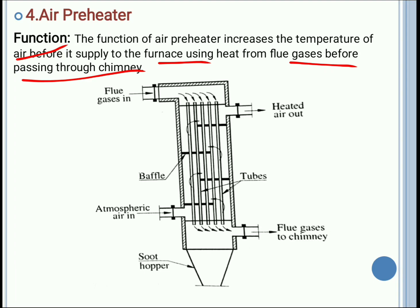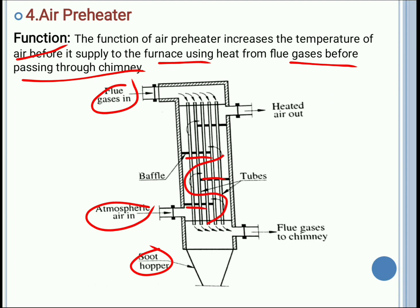This is the construction of air preheater. It consists of a soot hopper. There will be a pipe inside the air preheater. The flue gases are moved inside this pipe whereas the atmospheric air will move outside this pipe. The atmospheric air will enter from the bottom and it will travel outside the flue gases which are inside the pipe. Baffles are provided in order to direct the atmospheric air in a particular direction, which will increase the contact area, or contact time, between the atmospheric air and the flue gases.